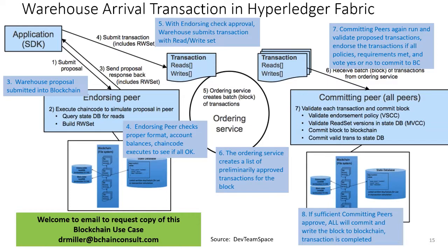The endorsed, resubmitted transaction with its read-write set gets sent to the ordering service — separate nodes on the blockchain. By having processing and consensus functions divided up into separate computer nodes, Hyperledger Fabric can process much faster than if all nodes were doing all the work themselves, which is what you see in a Bitcoin transaction. The ordering service puts transactions in order for the block and provides a shared communication channel, broadcasting messages containing transactions so all connected peers receive them in the same logical order — that's step six.